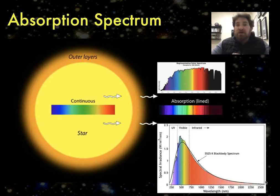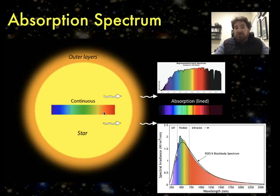As an example, the inner part of the sun gives off a nice smooth continuous rainbow spectrum. But the outer layers of the sun absorb some of those wavelengths. And so by the time they reach our eye, we see all these missing wavelengths, these dark lines.